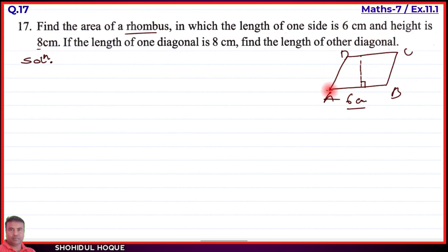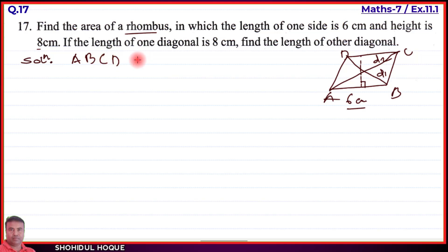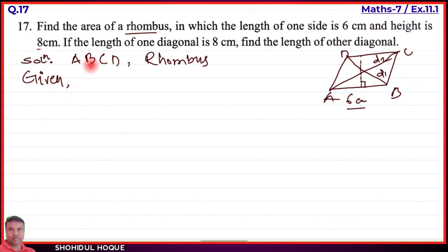Now for the diagonal: we have two diagonals. The first diagonal is d1 and the second diagonal is d2. We need to find the values of d1 and d2 for this rhombus A, B, C, D. The given information is noted on the figure.